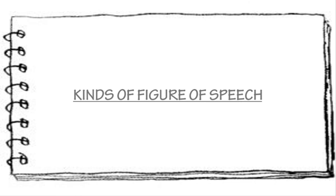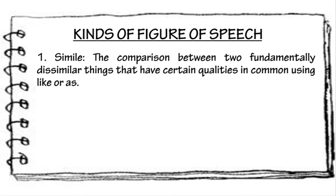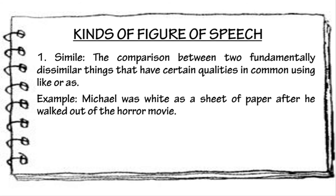There are several kinds of figures of speech. First, we have the simile. Simile is the comparison between two fundamentally similar things that have certain qualities in common using 'like' or 'as.' Example: Michael was as white as a sheet of paper after he walked out of the horror movie. In the given example, we use the word 'as' to compare Michael to a sheet of paper.